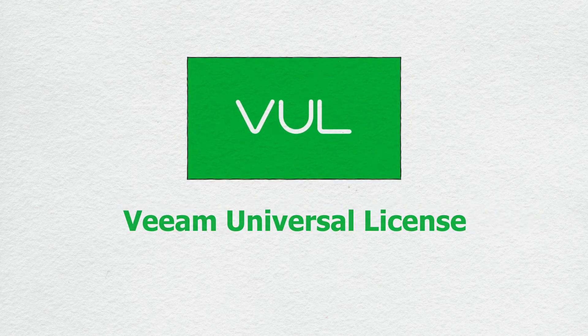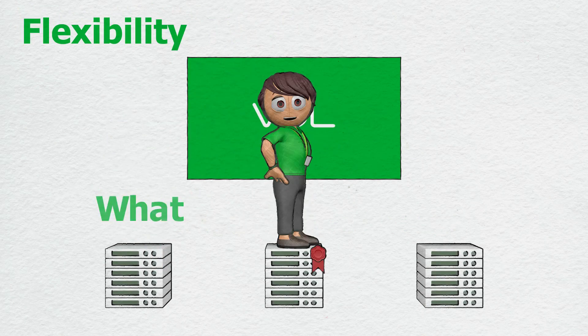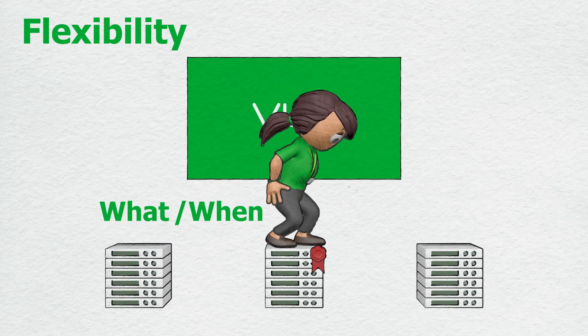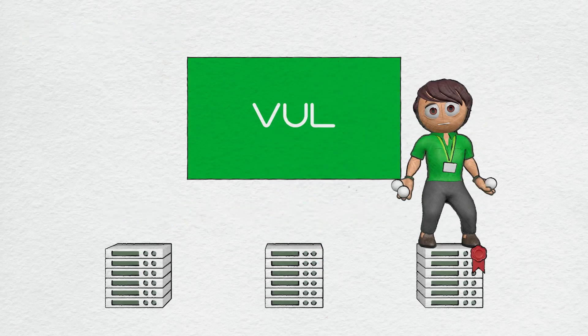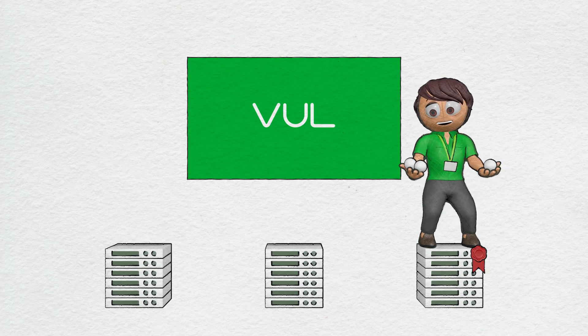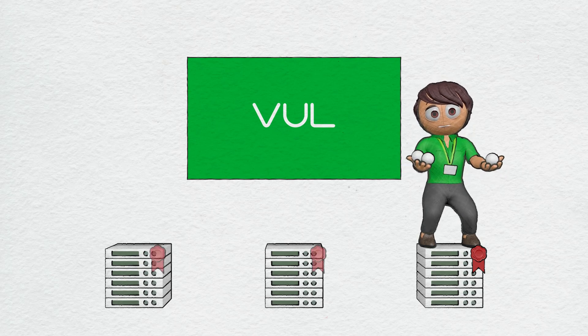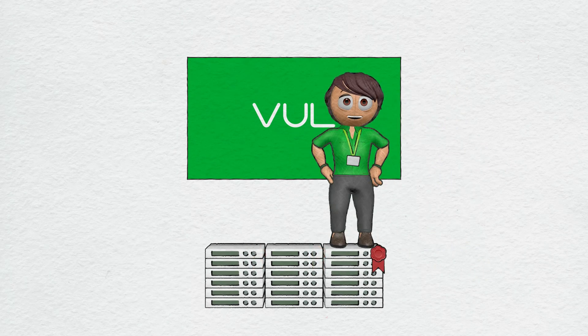Veeam has introduced a simple solution with Veeam Universal Licensing, or VUL. VUL brings customers the flexibility to choose what to protect and when to protect it, wherever the workload is located. VUL is truly universal, so there are no additions to juggle. Each workload consumes one license and, with merge options, products can be easily combined.